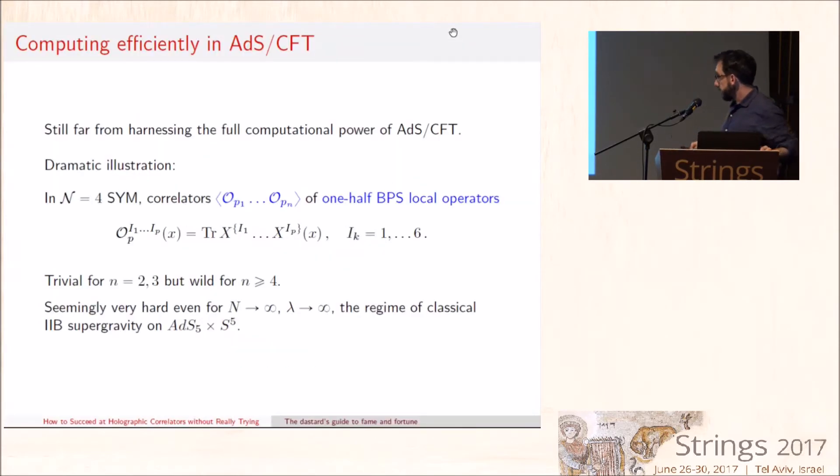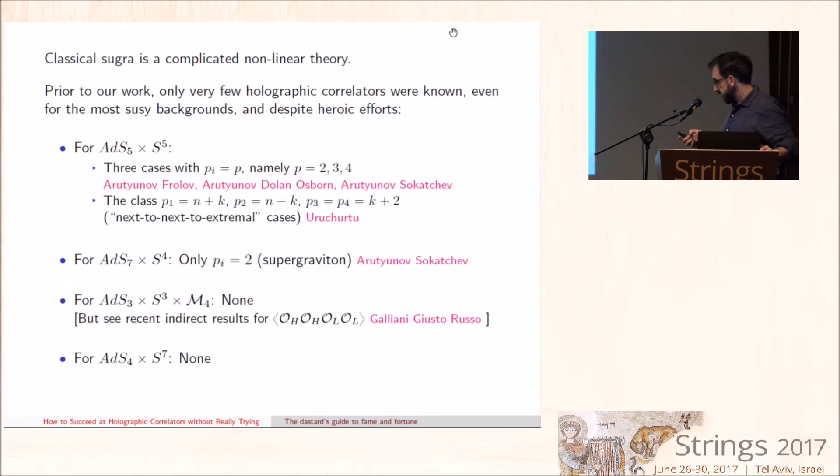The casual observer might be excused for thinking that this problem was solved long ago, but not at all. This is a summary of the state of affairs before our work. The best-studied example is AdS5×S5. The hardest case is where the weights of the external operators are equal and only three cases have been computed with enormous amount of work. Heroic efforts by several groups have led to push the calculation only up to P=4.